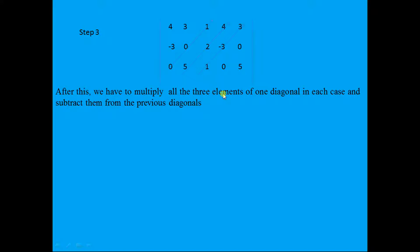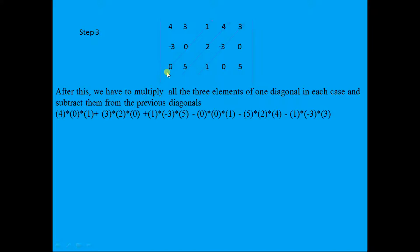The up diagonals are: first diagonal 0 × 0 × 1 = 0; second diagonal 5 × 2 × 4 = 40; third diagonal 1 × (−3) × 3 = −9. So we have 0 + 40 + (−9), giving a combined up-diagonal result of 31.